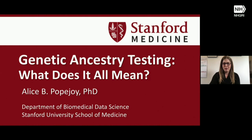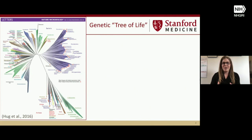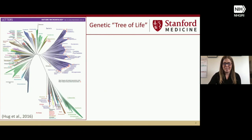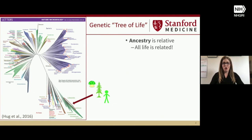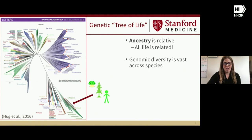When we think about ancestry, especially in the modern era where we have these direct-to-consumer genetic ancestry tests, we think about ancestry as humans. But I like to start by thinking about ancestry as everything that's connected and related by DNA. This is a tree of life according to some bacteriologists produced in 2016, and it shows the vastness of genetic diversity across all species. We as humans live on a tiny branch called Epistoconta, and we share it with fungi and trees. So relative to all life that is made up of DNA, ancestry is really relative.